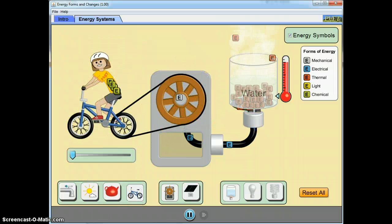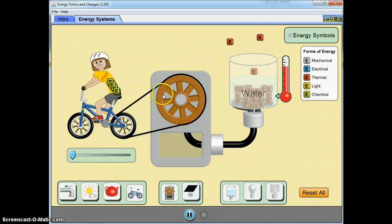All right. The last one we'll be doing is the simulation of the bike. You notice over here that there's a lot of energy in the body, which is in the form of chemical energy.